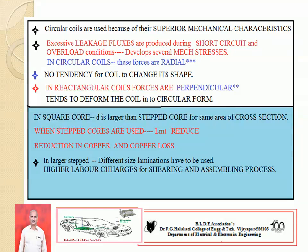If a larger number of steps are used, then different sizes of laminations are required. This creates a small disadvantage — an increase in labour and charges for assembling and shearing of these laminations. But this is not significantly considered. We have to consider the reduction of copper loss and the reduction of copper. Hence, in general, stepped cores are more useful for higher rating transformers.